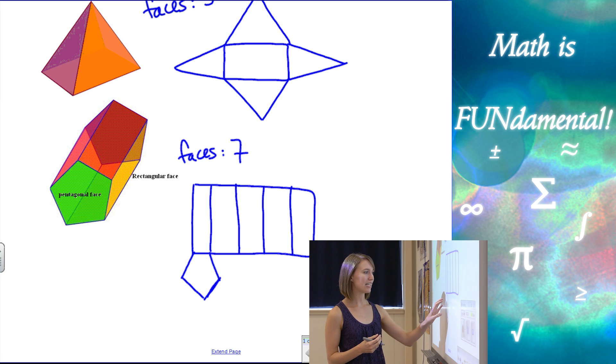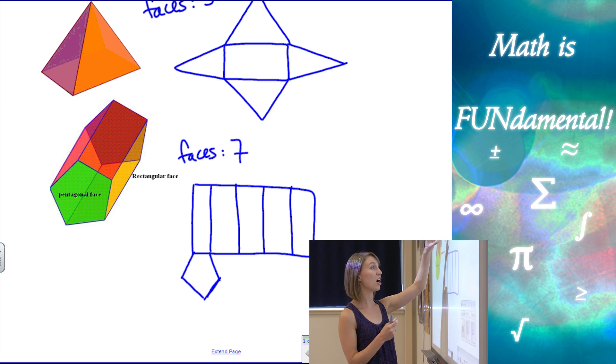We can't put it on the same side. We can't also put it on the bottom where that other pentagon is because then if we rolled this thing up, those two pentagons would overlap and they wouldn't make our three-dimensional shape.